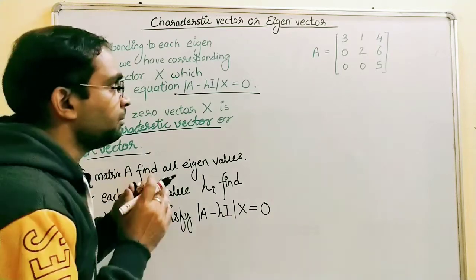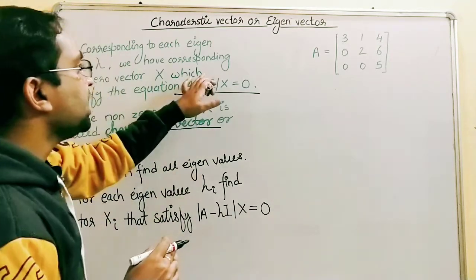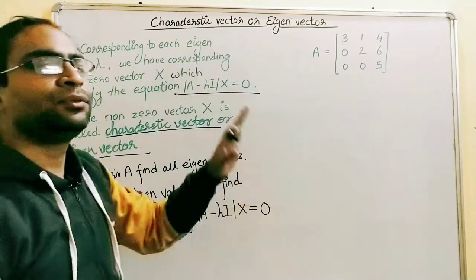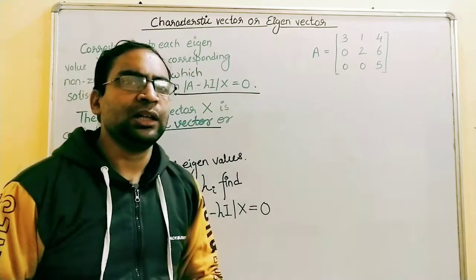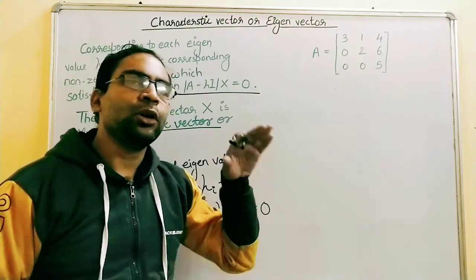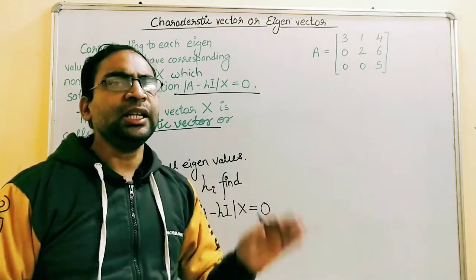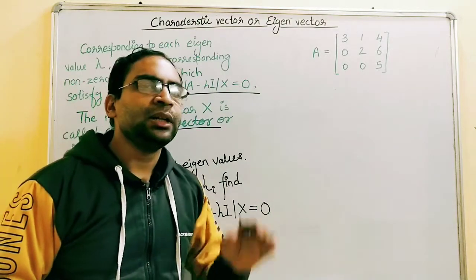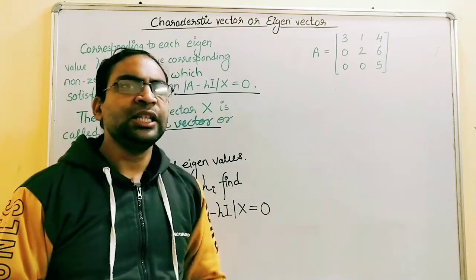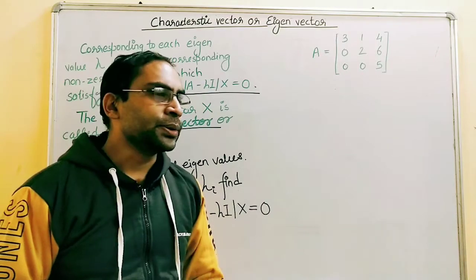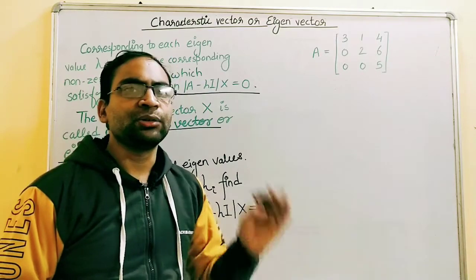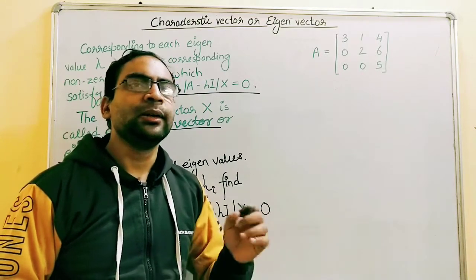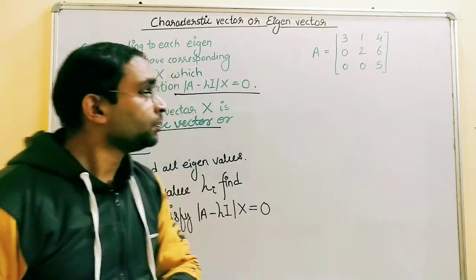So if for a matrix A we have three eigenvalues, then for those three eigenvalues we will have three corresponding eigenvectors.